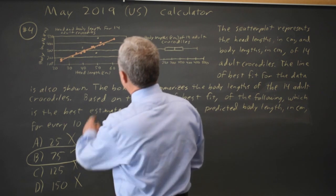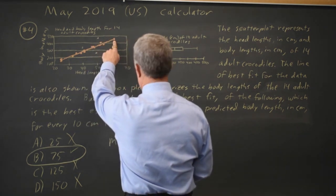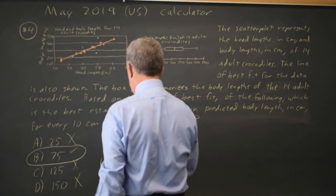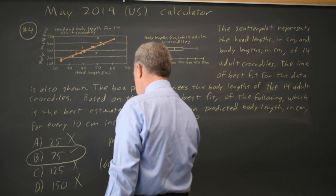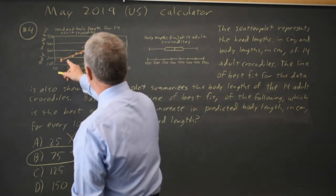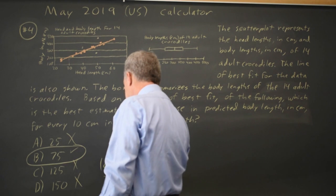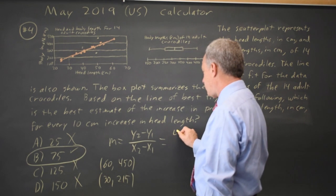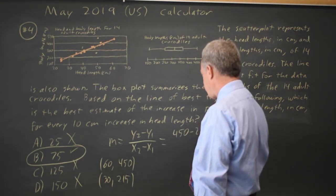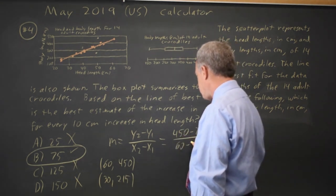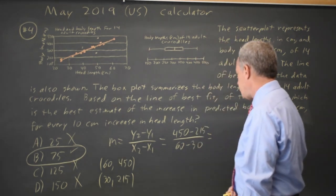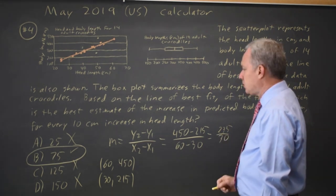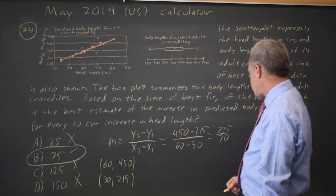And at a head length of 60, body length is about 450, and at a head length of 30, body length is about 215. So my slope is 450 minus 215 over 60 minus 30, which is 235 over 30, which is about 8.